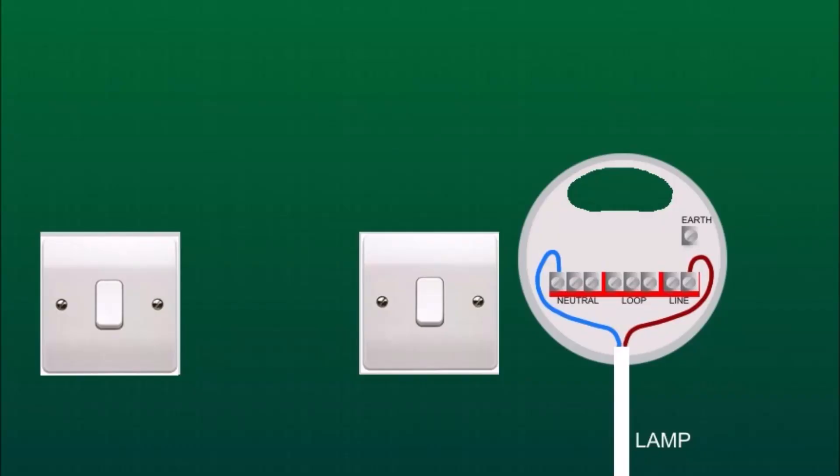On the next picture you see on the right the ceiling rose with four terminals: earth, line, loop and neutral. And on the left are two two-way switches that we need to link together.